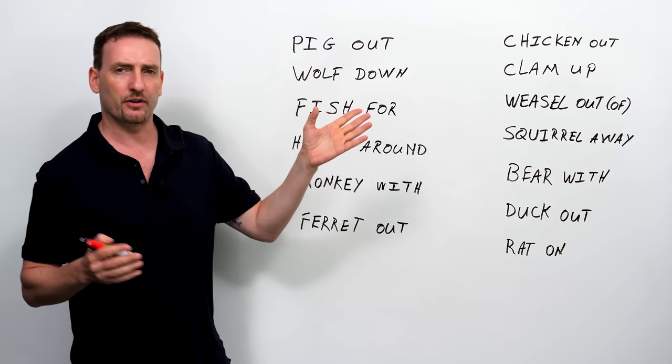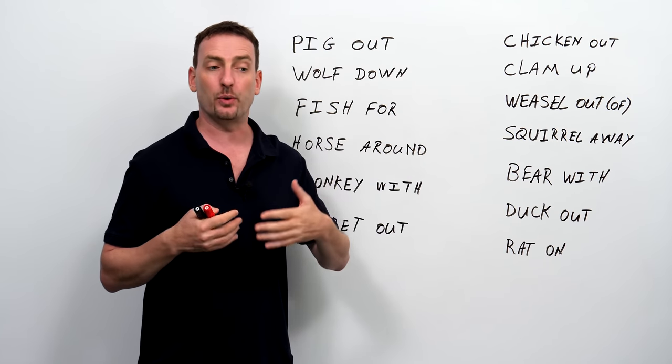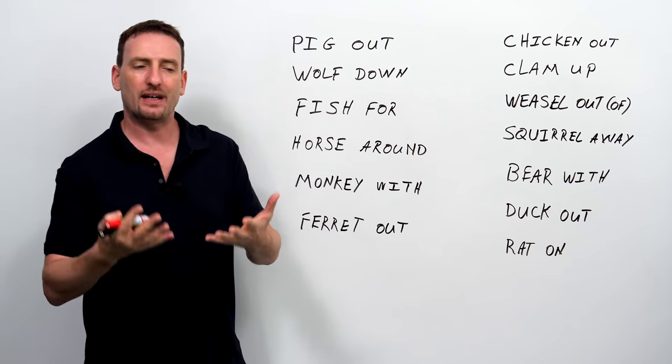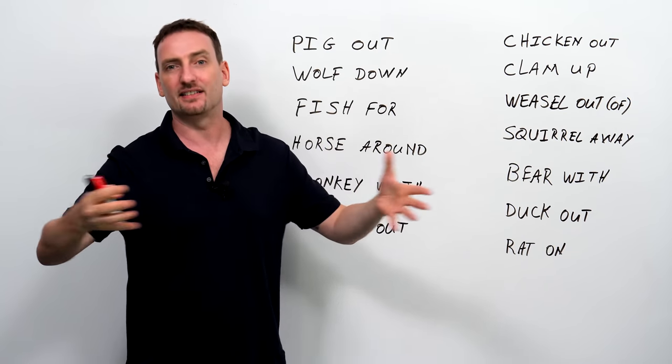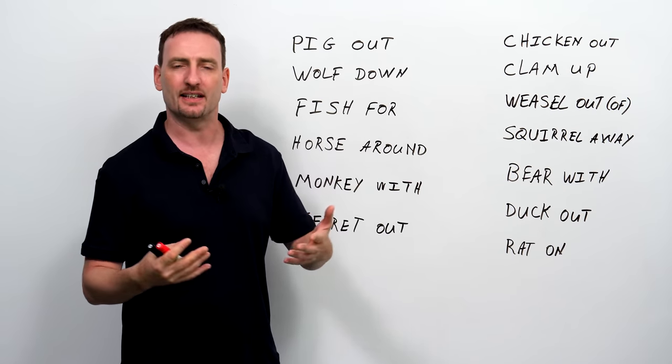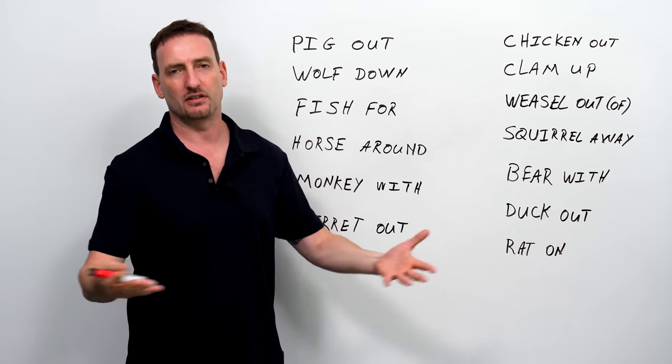Pig out and wolf down, they're kind of similar. They both have to do with eating. If you pig out, it means you're eating a lot, because the idea is that pigs eat a lot, they're always eating. So, if you pig out, you're eating a lot.